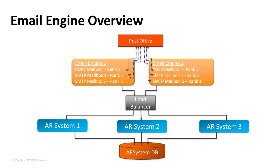This is a logical view of the same environment. Each email engine is capable of handling multiple mailboxes. In this example, I have three mailboxes handled by two email engines — email engine one is primary for one incoming and one outgoing mailbox, while email engine two handles my second outgoing mailbox. If either email engine goes down, the other will handle all three mailboxes. So with this layout, I get distribution of my workload as well as high availability.